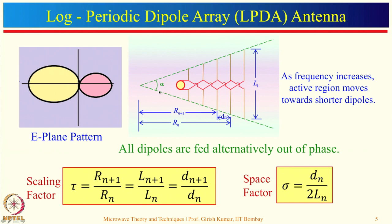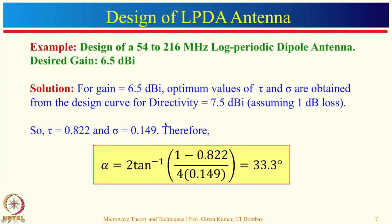The angle alpha of the dipole array can be found using tan(alpha/2) = (L_n/2) / R_n, where L_n is the dipole half-length and R_n is its distance from the apex. From this expression we can calculate the value of alpha.